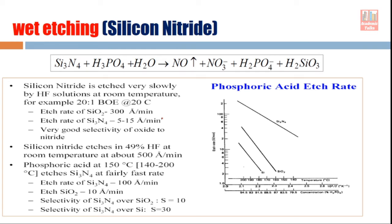For etching of silicon nitride, the preferred agent is H3PO4 — phosphoric acid. Silicon nitride is reacted with phosphoric acid plus water, and NO gas forms; that way the material is removed from the surface. There is also another method: HF can be used to etch silicon nitride, but silicon nitride is etched very slowly by HF solution.